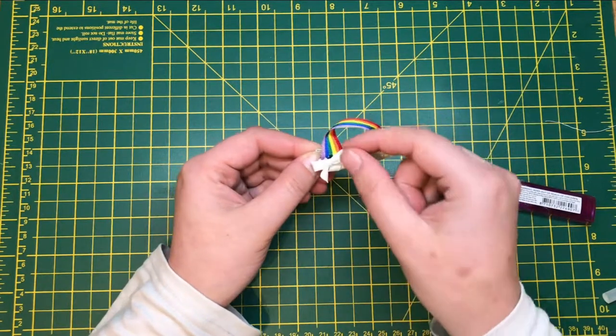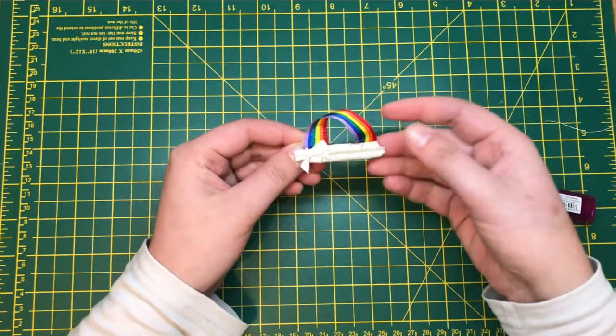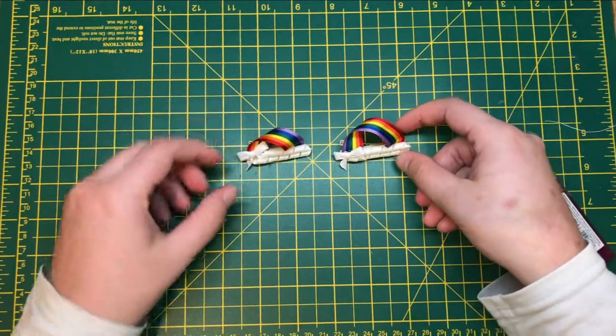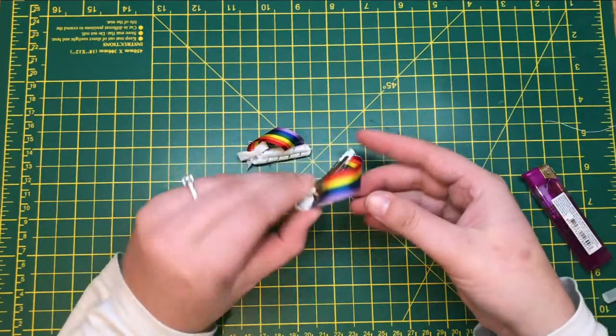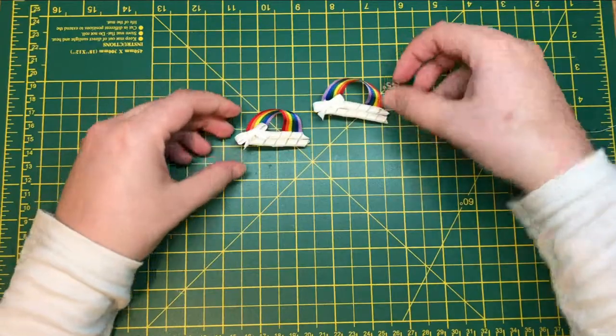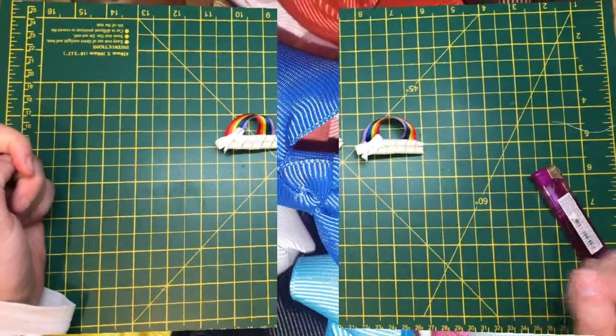You can glue down these little bits if you wish. That is the rainbow clip. Finished. Lovely and easy. Simple. Great spring summer bow. Thank you for watching.